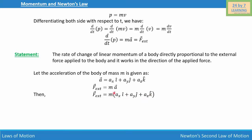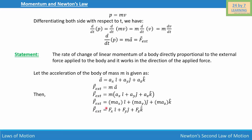Now let's distribute mass inside the bracket. If we do that, we will write F external is equal to m a_x i plus m a_y j plus m a_z k. As you can see, this is the x component of force, this is the y component of force, and this is the z component of force. So we can write F external is equal to F_x i plus F_y j plus F_z k, where F_x is m a_x, F_y is m a_y, and F_z is m a_z.